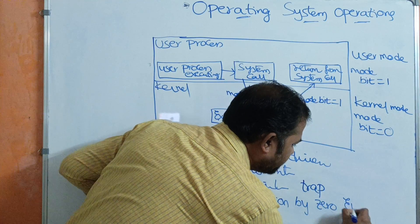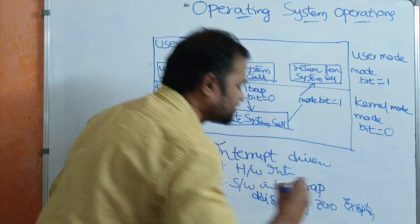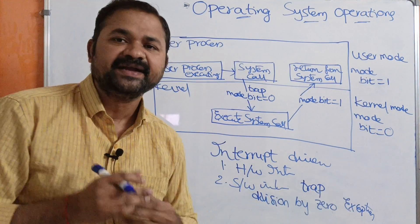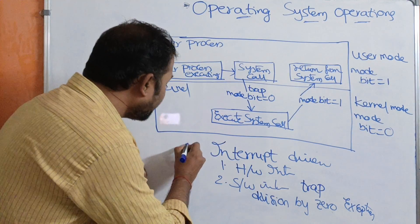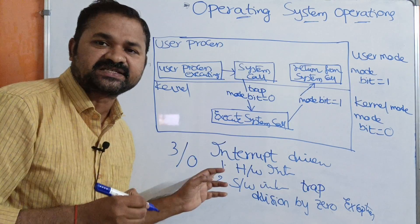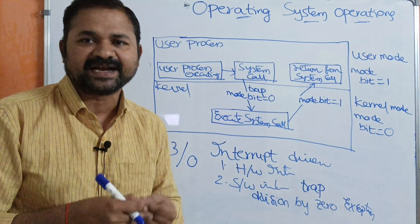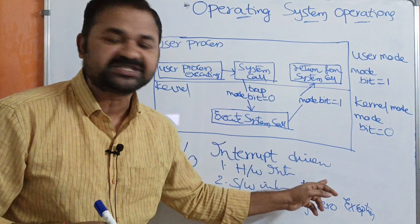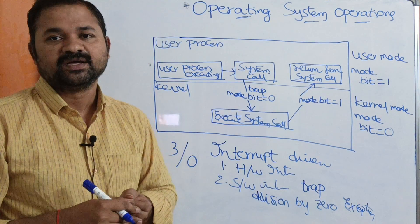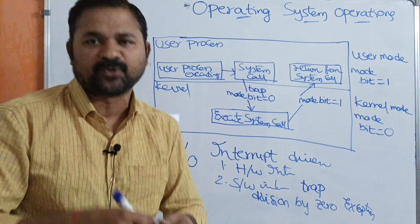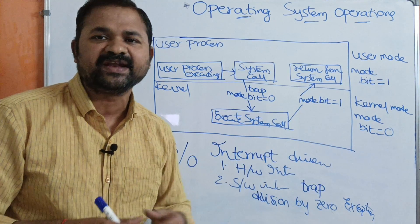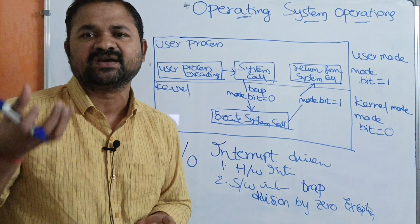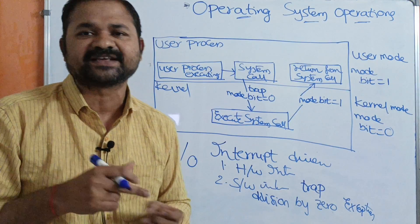Software interrupt may be either a trap or an exception. The best example of an exception is the division by zero instruction, where the numerator is any value but the denominator is zero. An exception is a runtime error which occurs during program execution. So we can say that the operating system is interrupt-driven. When the CPU is executing a program, it may receive either a hardware interrupt or a software interrupt, and with the help of the operating system, it will handle the corresponding interrupt.